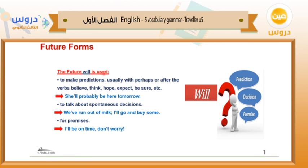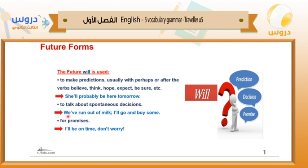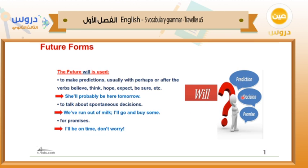Future 'will' is used to make predictions, usually with words like perhaps, or after verbs like believe, think, hope, expect, and be sure. For example: 'She'll probably be here tomorrow.' It is also used for spontaneous decisions: 'We've run out of milk — I'll go and buy some.' And for promises: 'I'll be on time, don't worry.' So for predictions, spontaneous decisions, and promises, we use 'will.'